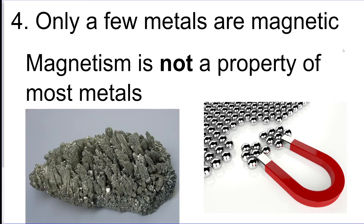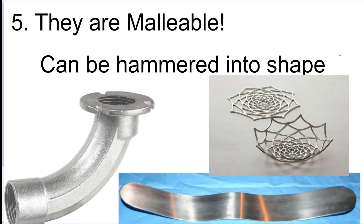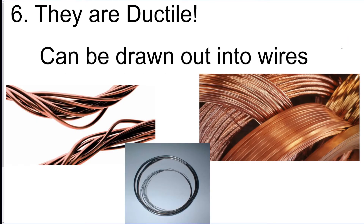Only some metals are magnetic, so we do say metals can be magnetic, but not every single metal is a magnet. They are malleable, which means they can be hammered into different shapes, and we use the shapes for different functions. They are ductile, which means they can be drawn out into really long wire. This is really useful for running cables or electricity around our planet.